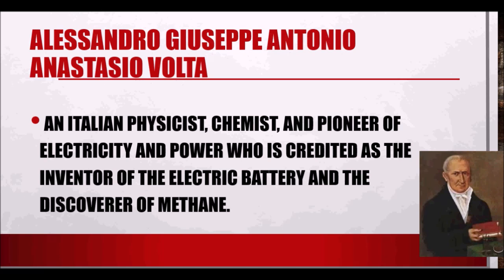The greatest rival of Luigi Galvani was Alessandro Giuseppe Antonio Anastasio Volta — more commonly known as Alessandro Volta — an Italian physicist, chemist, and pioneer of electricity and power, credited as the inventor of the electric battery and the discoverer of methane. Alessandro Volta disproved Galvani's claims, proved that humans can generate electricity, and invented the very first battery, showing that electricity is not purely a manifestation of God's power.